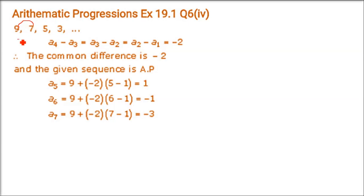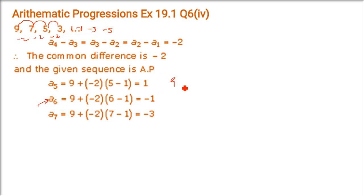Fourth AP: 9, 7, 5, 3. Check: 7 - 9 = -2, 5 - 7 = -2, 3 - 5 = -2. Common difference is -2, so this is an AP. Adding -2 to get more terms: 1, -1, -3. Using the formula for a₆: a + (n-1)d = 9 + (5)(-2) = 9 - 10 = -1.